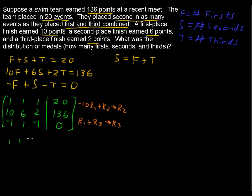The result: the first row is not changed, 1, 1, 1, 20. The second row, negative 10 times 1 plus positive 10 is 0. Negative 10 times 1 plus 6 is negative 4. Negative 10 times 1 plus 2 is negative 8. And negative 10 times 20 plus 136 gives you negative 64. Next row, R1 plus R3, adding all of these plus all the numbers in the bottom row gives you 0, 2, 0, 20.